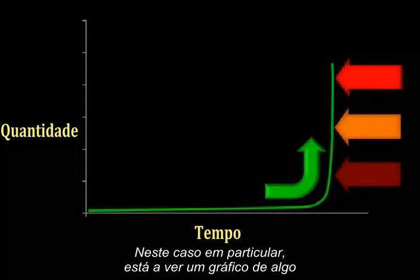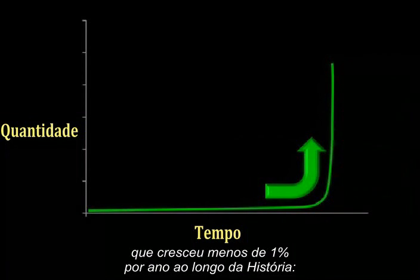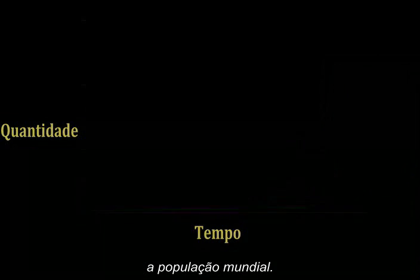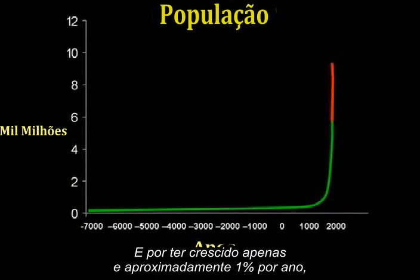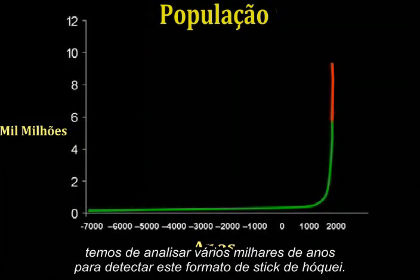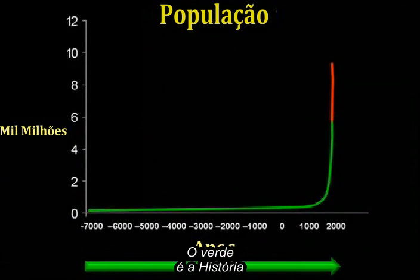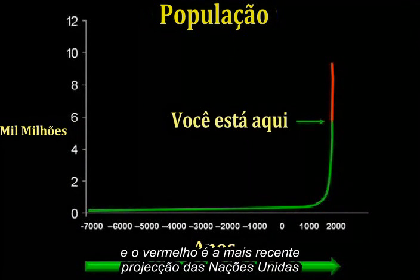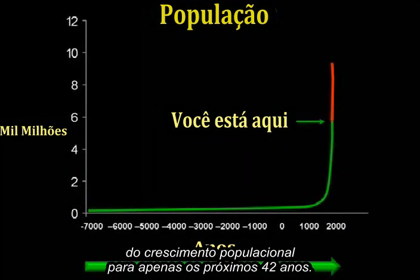In this particular case you are looking at a chart of something that historically grew at less than 1% per year. It is world population, and because it is only growing at roughly 1% per year, we need to look at several thousands of years to detect this hockey stick shape. The green is history, and the red is the most recent UN projection of population growth for just the next 42 years.